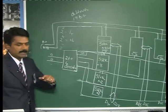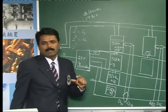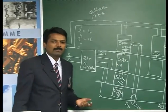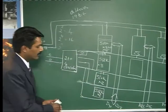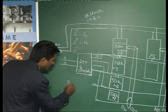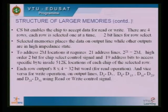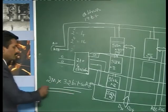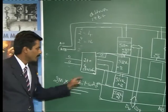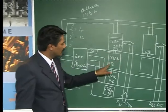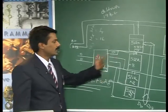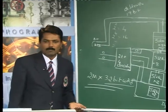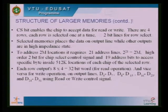Each memory chip has a control signal for read or write. When a read operation is done, the data at the selected location is output on the data lines. In total, we access a 32-bit word at the output with a total of 2 mega locations. We achieve a higher memory size by using smaller 512K by 8-bit chips, and can organize memories of different sizes to meet the computer's memory requirements. This is the structure of large memories.